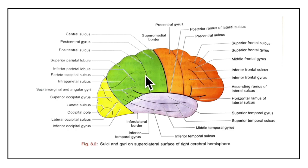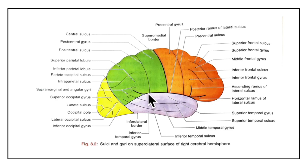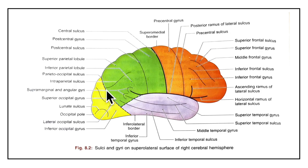Now let us learn about the sulci that separate the different lobes. The central sulcus begins at the supramedial border of the hemisphere, a little behind the midpoint between the frontal and occipital poles. It runs on the supralateral surface obliquely downwards and forwards, ending a little above the posterior ramus of the lateral sulcus. Next, the lateral sulcus separates the orbital and tentorial parts of the inferior surface. On the supralateral surface it divides into anterior, ascending and posterior branches, the posterior branch being the largest, passing backwards and slightly upwards.